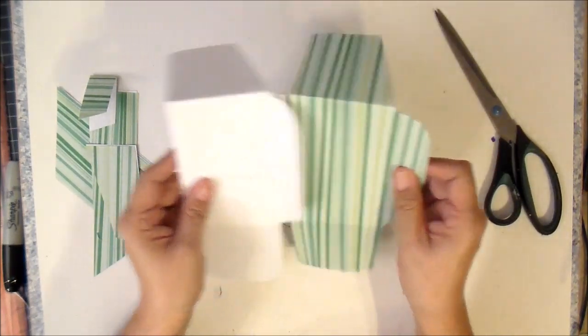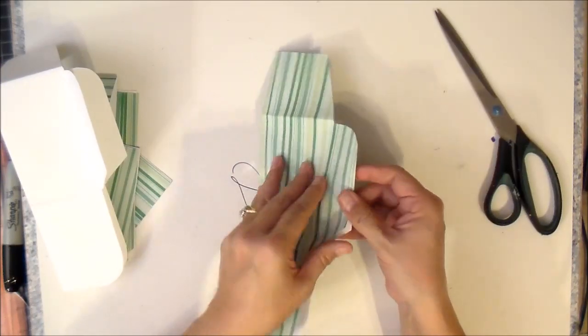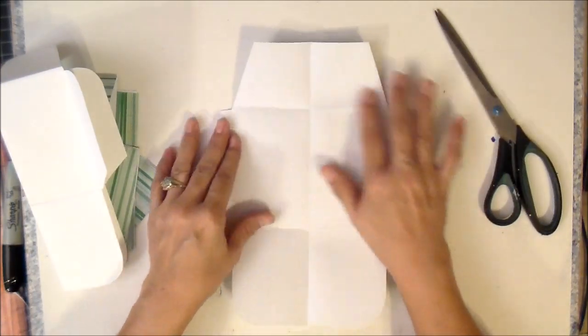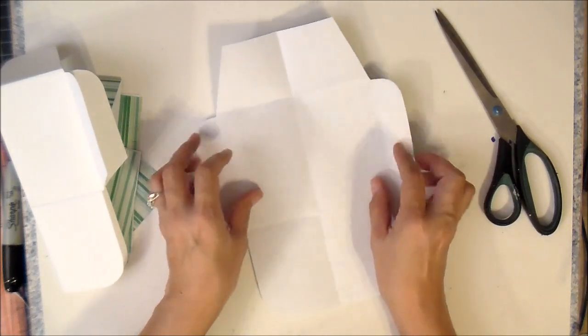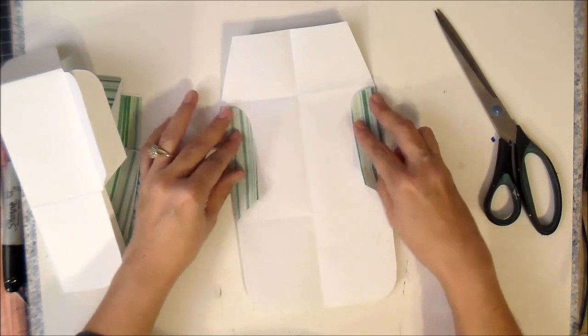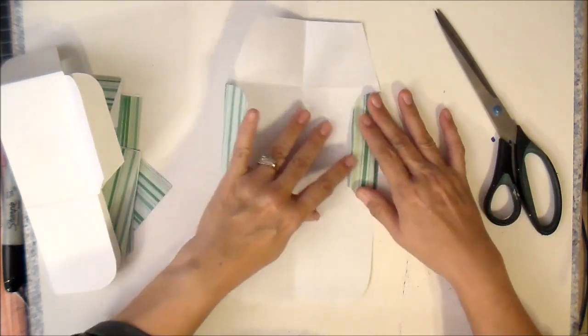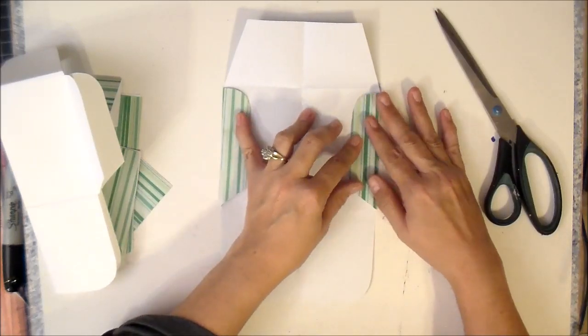Now pull your envelope out, and it's already creased for you. It doesn't matter that it has the center crease, at least not for my project, because we're going to be putting mats on it, so you won't be able to see all those creases.